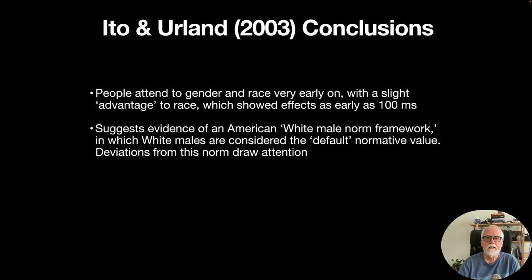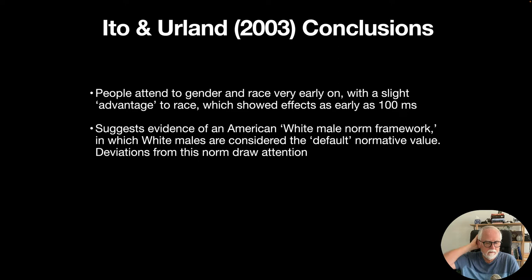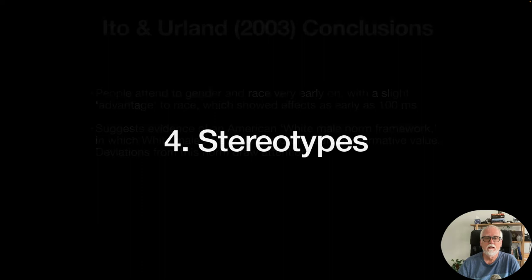The authors concluded that people attend to gender and race very early on, with a slight advantage to race — effects as early as 100 milliseconds. They suggest this reflects an 'American white male norm' framework, in which white males are considered the default, and deviations from this norm draw attention. This is consistent with other ERP research showing that unexpected or different stimuli produce larger N100 responses. Social categorization effects like this happen very, very quickly.